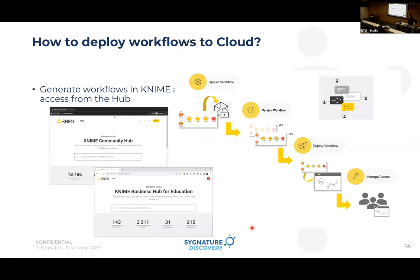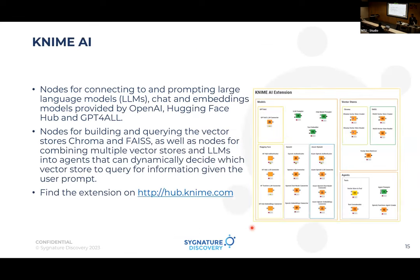To deploy to the cloud: you build all workflows on your local KNIME Analytics Platform, then connect to the cloud — either the community hub (publicly accessible) or KNIME Hub / Business Hub (privately within your network). Workflows can be versioned and deployed within the hub, which acts like AWS with its own CPU and RAM. Colleagues can download and load workflows into their own KNIME instance, and you can manage access permissions.